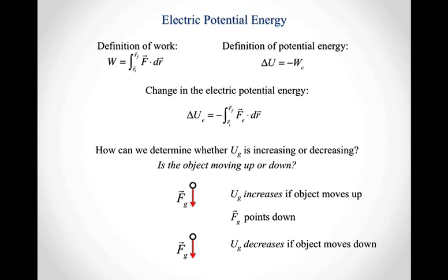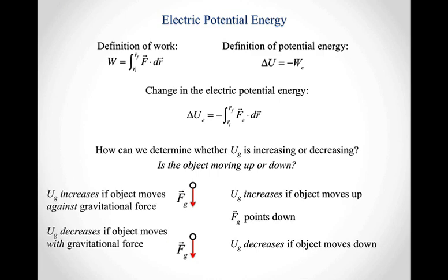Because the gravitational force points down, we can reinterpret that to say the gravitational potential energy increases if the object moves against the gravitational force, and decreases if the object moves with the gravitational force. So instead of thinking about whether the object is moving up or down, we can think about whether the object is moving with or against the gravitational force.